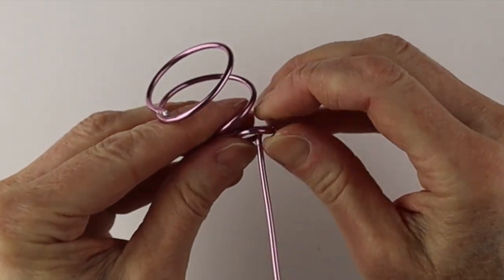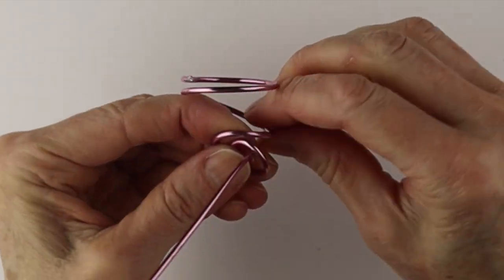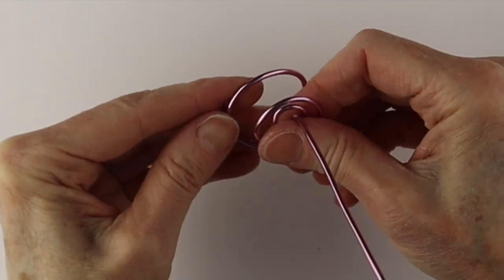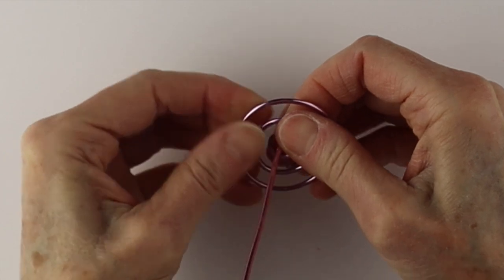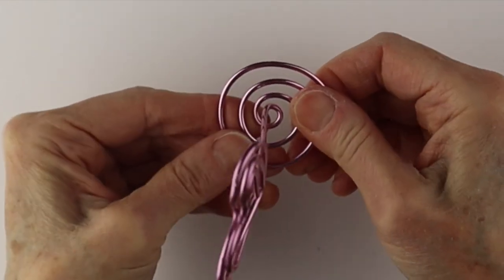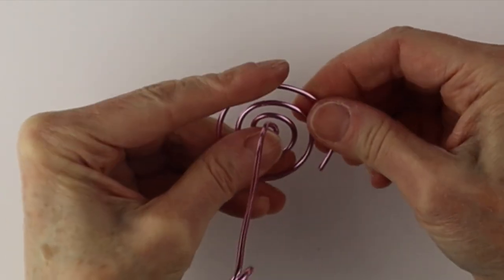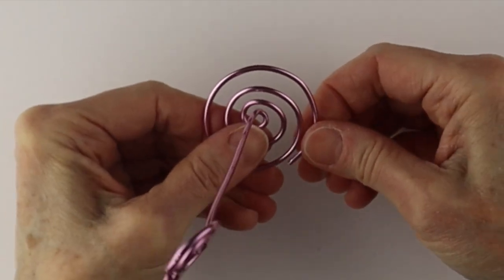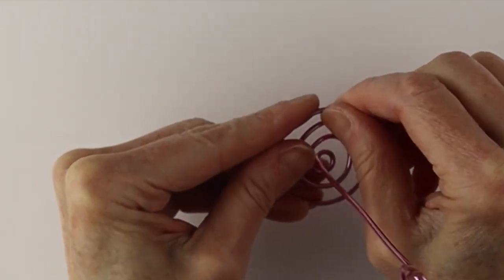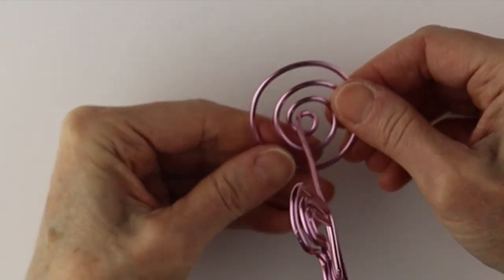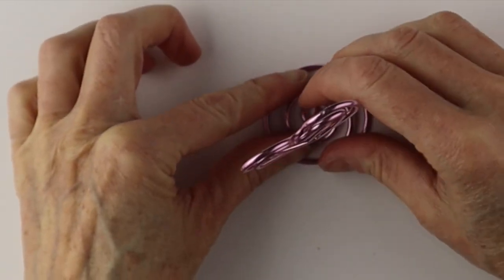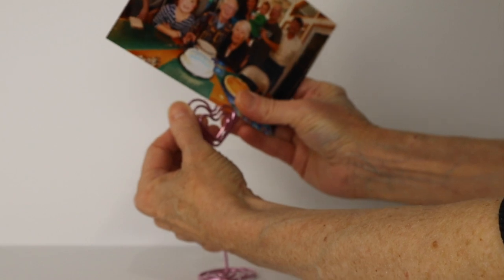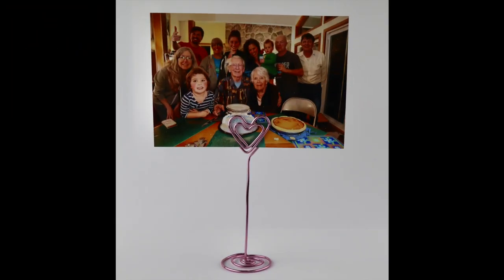And then you can fix the spiral as we did previously where you just push the wires together. Just gently push them together. You can spread that out a little bit to make it wider and do any little adjusting that you need. So the center wire is right in the middle and it's balanced and it stands and then you can just add your photo right there.